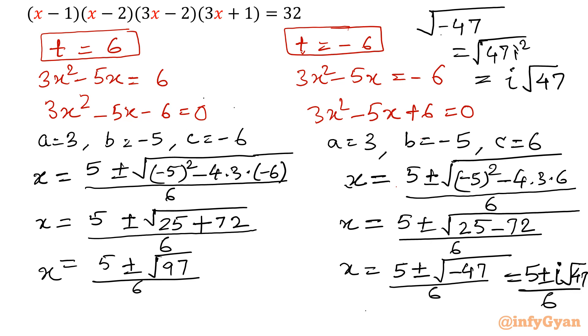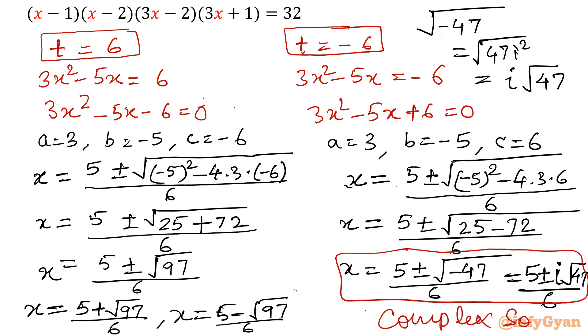Now you can see the difference. The real solutions are x = (5 + √97) / 6 and x = (5 - √97) / 6. The other solutions are complex solutions. So our real solutions are x = (5 + √97) / 6 and x = (5 - √97) / 6.